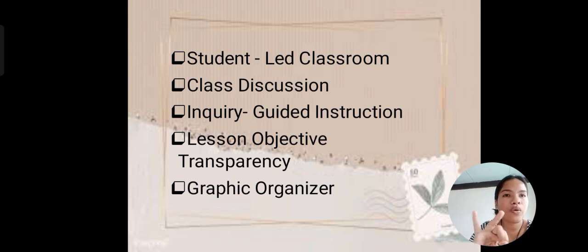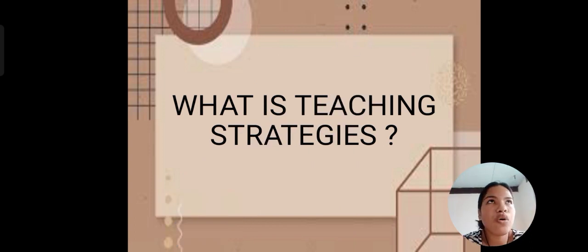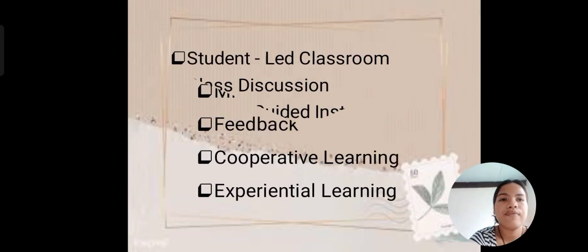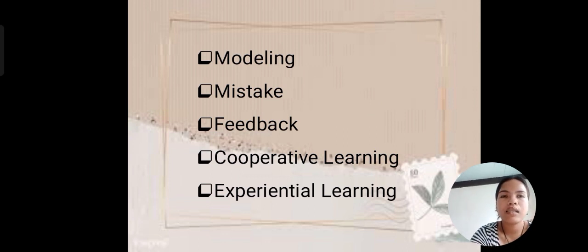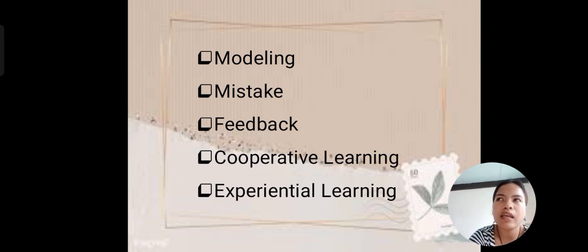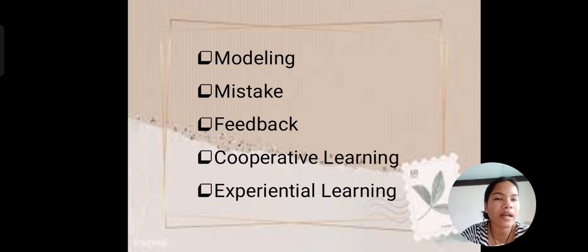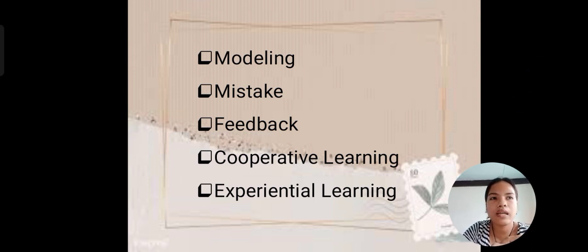These are strategies a teacher can use with students. You can use modeling — meaning you give an example as a teacher, and through that given example, students learn. For example, in a science subject, you give students a model like a figure showing the parts of the circulatory system, and they learn through pointing out the parts. You can also use feedback to know which of your students have low or high understanding.